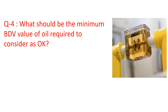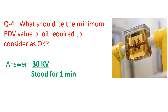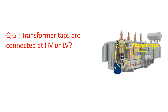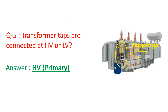What should be the minimum BDV (Breakdown Voltage) value of oil to consider it acceptable? Answer: 30 kV, held for at least one minute. The final result should be the average of three tests. Are transformer taps connected on the HV side or LV side? Answer: HV side. In general terms we call these primary and secondary.